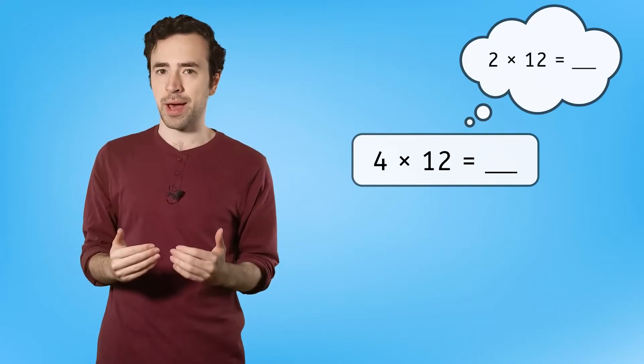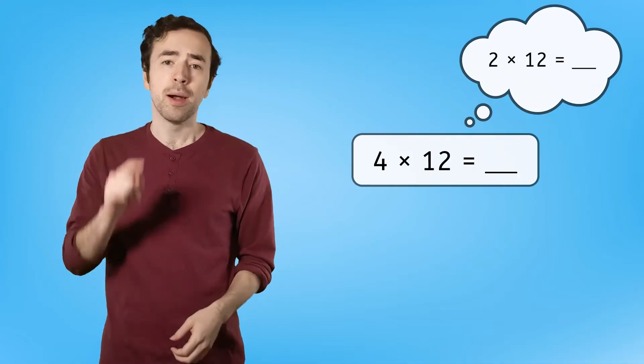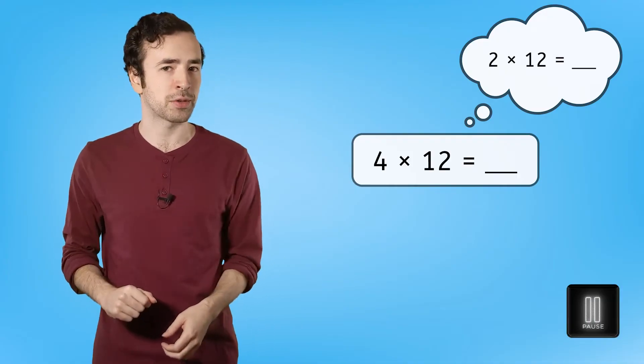If we know the answer to two times 12, then we can double that amount to figure out the answer to four times 12. Give it a try. Pause here to solve in your guided notes.